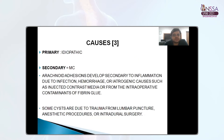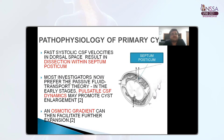Rupture is a very rare complication. Causes can be divided into primary and secondary. Primary is most commonly idiopathic, and secondary arachnoid cysts develop secondary to inflammation due to infection, hemorrhage, or iatrogenic causes such as injected contrast media or intraoperative contaminants of the fibrin group. Some cysts are due to trauma from lumbar puncture, anesthetic procedures, or any intradural surgery. Pathophysiology of a primary cyst involves fast systolic CSF velocities in the dorsal space resulting in dissection within the septum posticum. Pulsatile CSF dynamics may promote cyst enlargement, and an osmotic gradient can then facilitate further expansion.